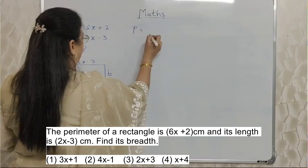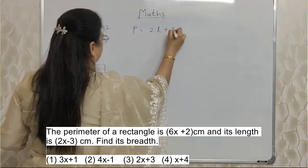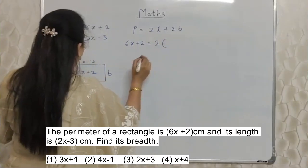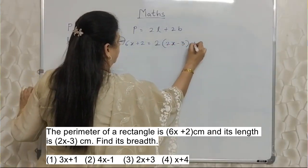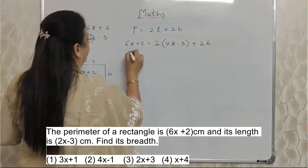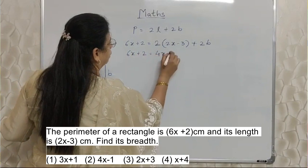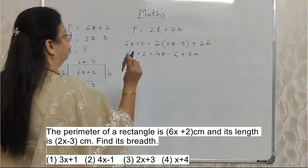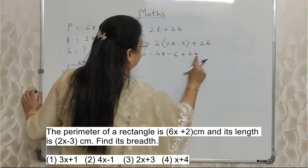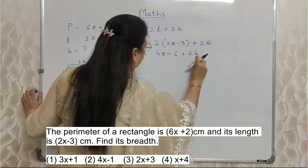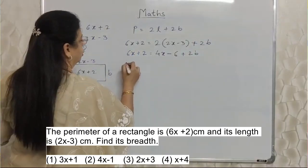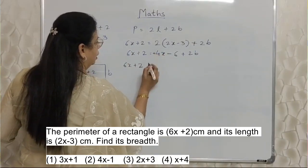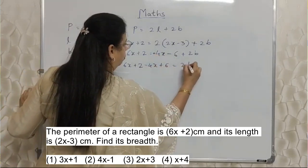We know the formula: perimeter of a rectangle is 2 times length plus 2 times breadth. Now P is 6X plus 2, and length is 2X minus 3. So: 6X plus 2 equals 2 into (2X minus 3) plus 2B. Let's solve: 2 into 2X is 4X, 2 into 3 is 6, so we get 6X plus 2 equals 4X minus 6 plus 2B.